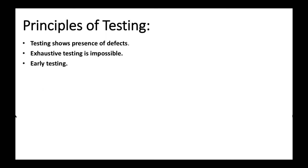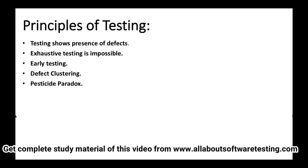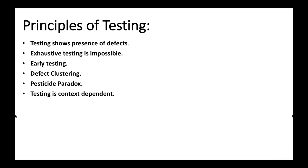First I will name the principles of software testing. The first principle is testing shows presence of defects, second is exhaustive testing is impossible, third is early testing, fourth is defect clustering, fifth is pesticide paradox, sixth is testing is context dependent, and the last is absence of error. We will study each of these principles one by one.